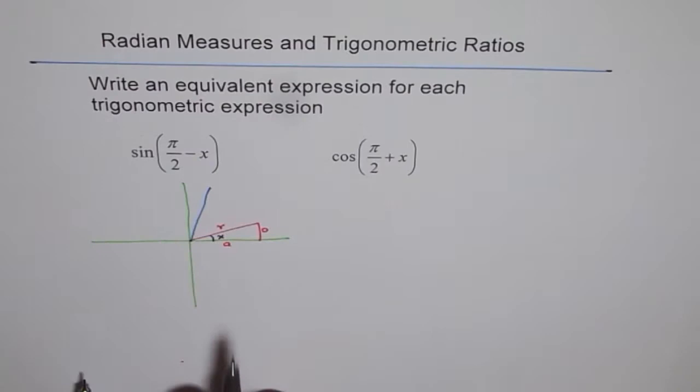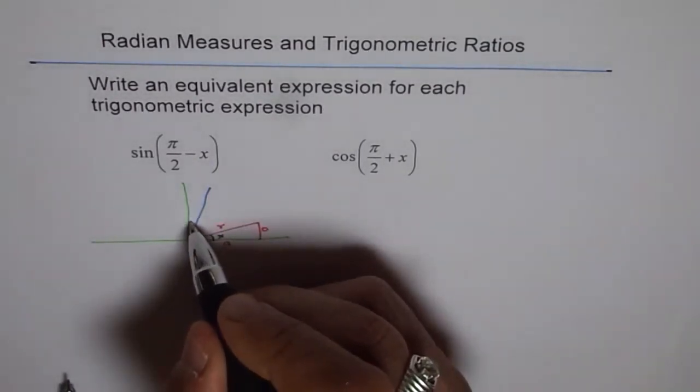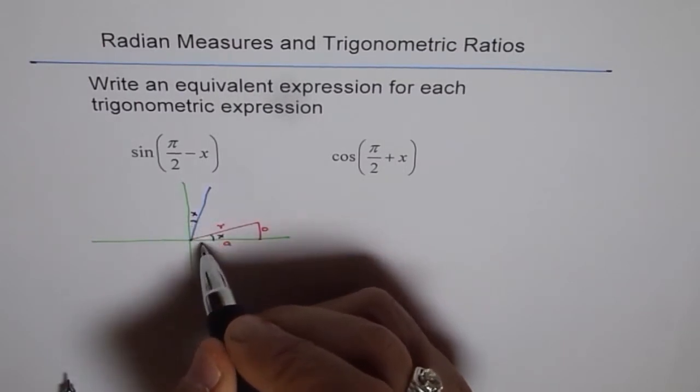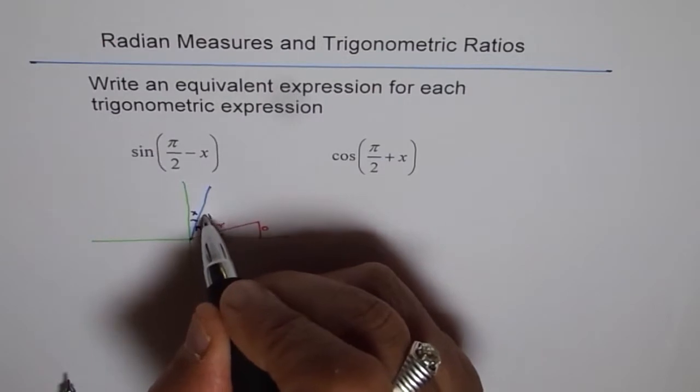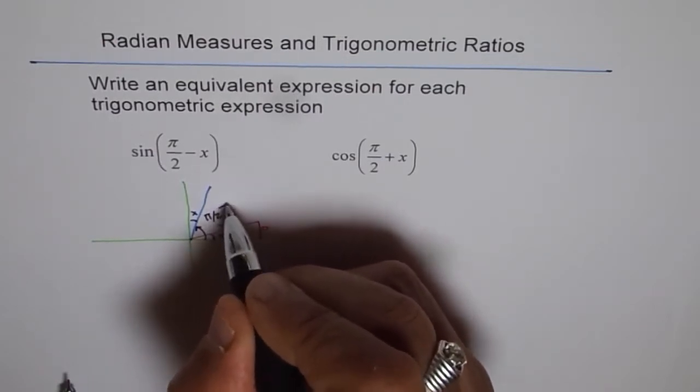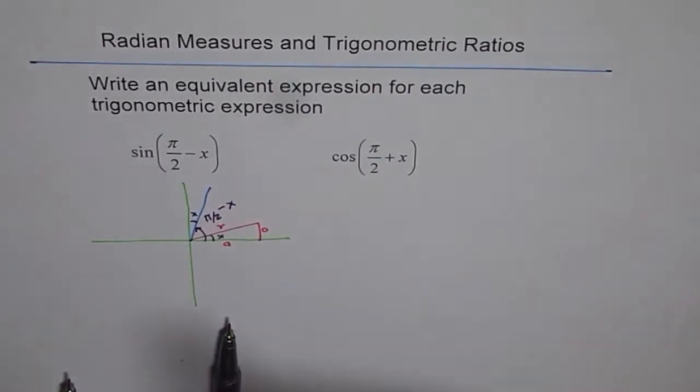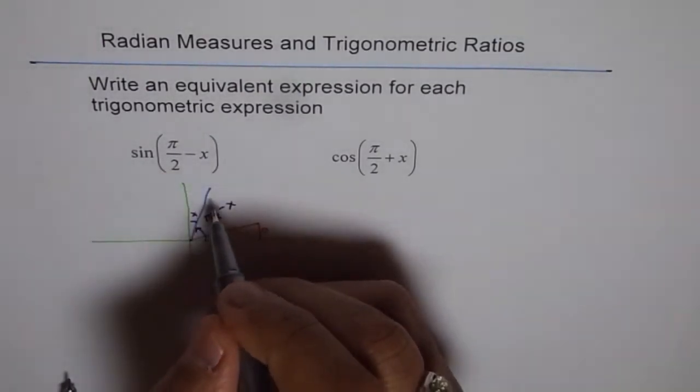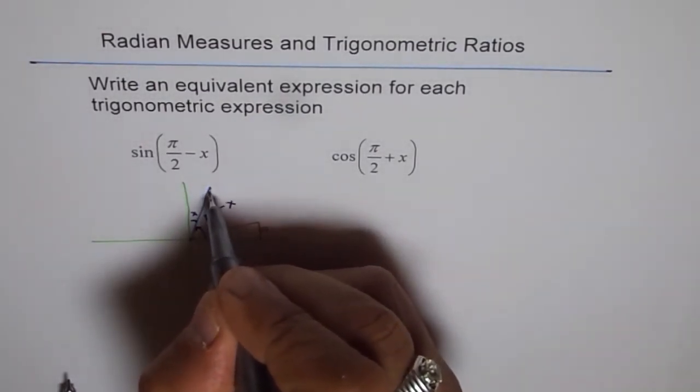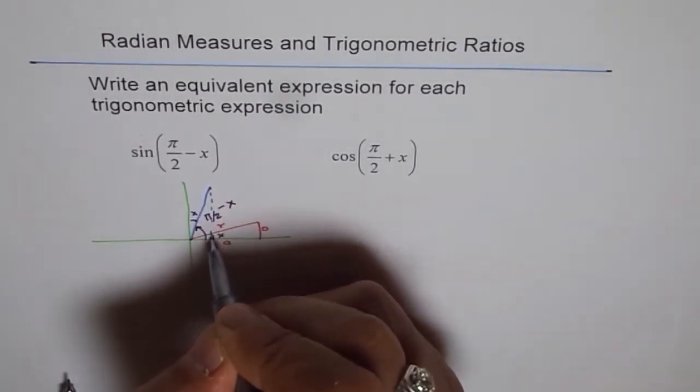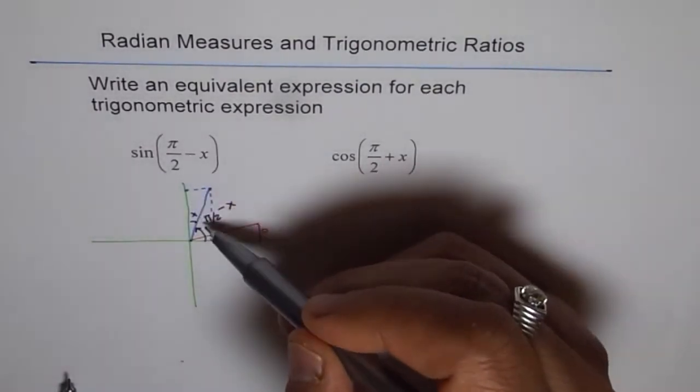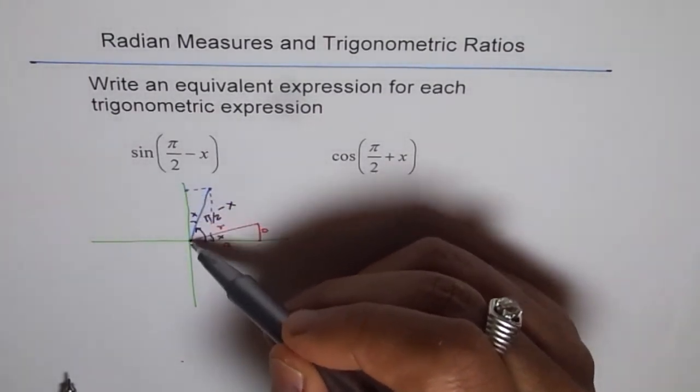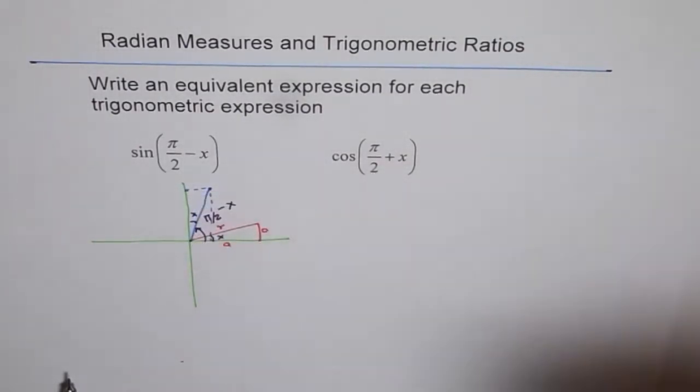In that case, our triangle for π/2 minus x will be something like this. Let's assume we are having the same radius. So let's go like this. So we have a triangle like this here. This angle is x, and then from here to here, it is π/2 minus x. Do you understand how we get π/2 minus x?